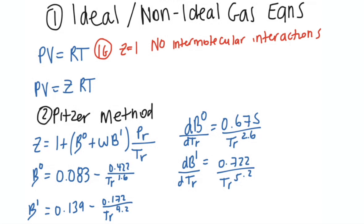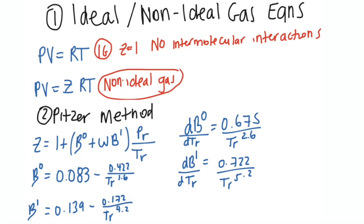For a non-ideal gas, it's going to be clear in your problems whether you have an ideal or non-ideal gas. You can see we have this Z here — this is something we can calculate, or we might be given a formula or some correlation for Z that we'll have to figure out. Z is a function of P, V, and T, so it's going to change depending on the pressure, molar volume, and temperature of our species.